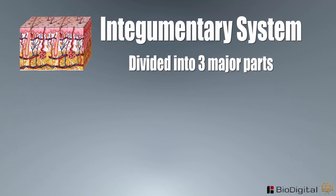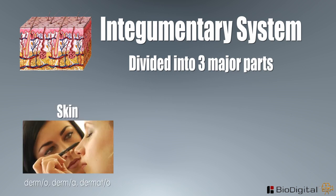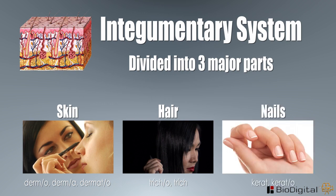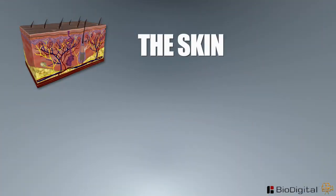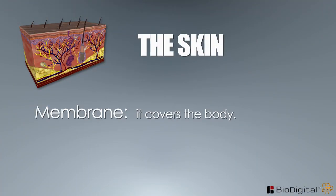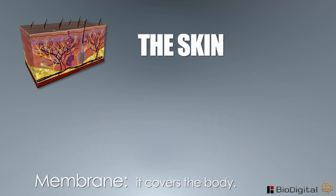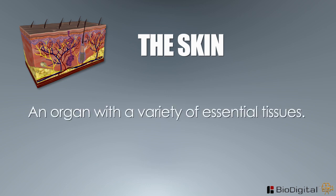This body system is divided into three major parts: the skin, the hair, and the nails. This system is known as a membrane because it covers the body, and an organ because it contains several tissues. For the purposes of this course, the system will be described as an organ with a variety of essential tissues.